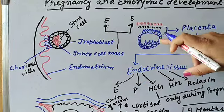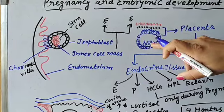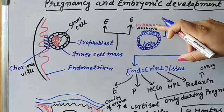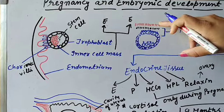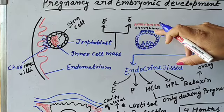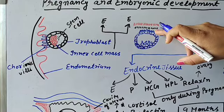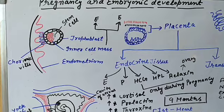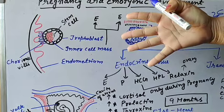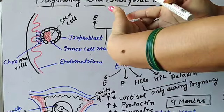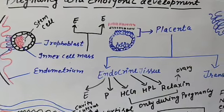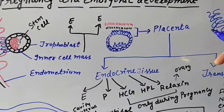In the diagram you can see the trophoblast, inner cell mass, chorionic villi, endometrium lining of the uterus, and the maternal blood. The endometrium tissue and the chorionic villi show interdigitation — the chorionic villi fit together with the endometrium lining — and that structure is known as the placenta.